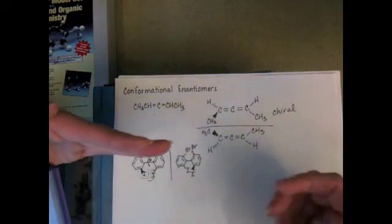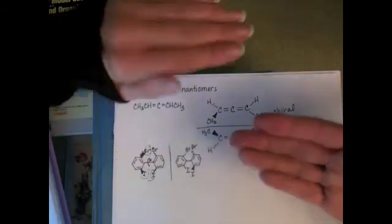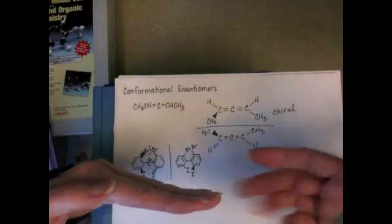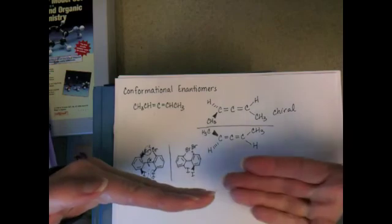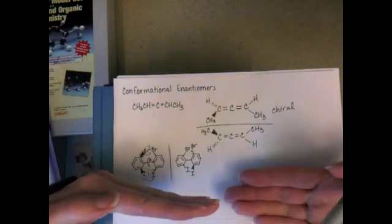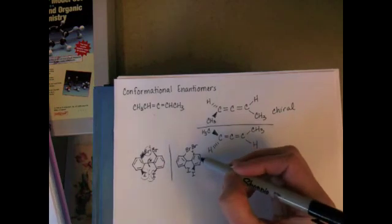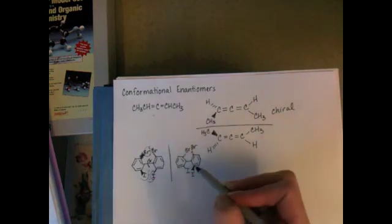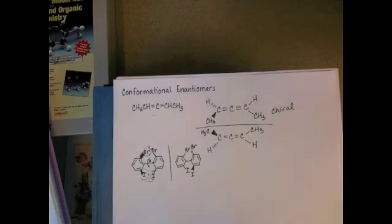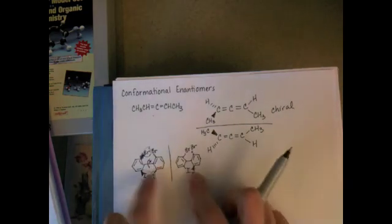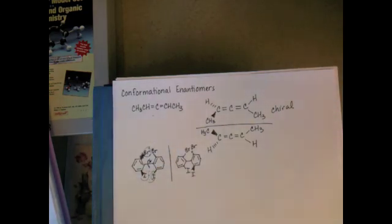But if we imagine ourselves with the two rings like this in this configuration, with the bromine going down into the paper and an iodine sticking up, and if we rotate the molecule around, it's going to be impossible for us to superimpose this structure onto this molecule. Because the two molecules are not superimposable, they are chiral.